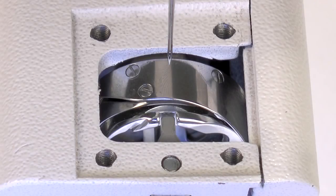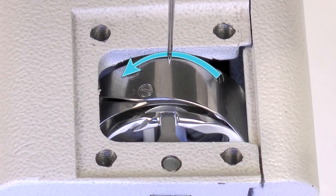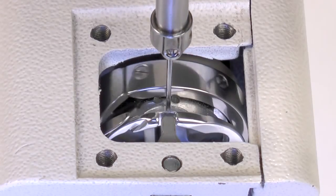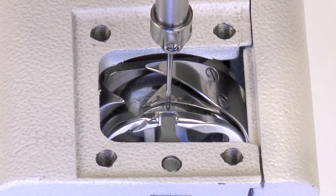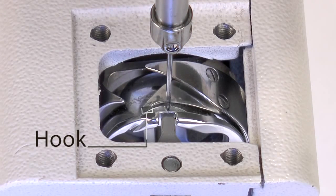Also important to the timing is the position of the hook in the hook assembly. As the hook assembly rotates counterclockwise, the hook is visible after the needle has reached its lowest point and begins to come back up. The hook is highlighted here.